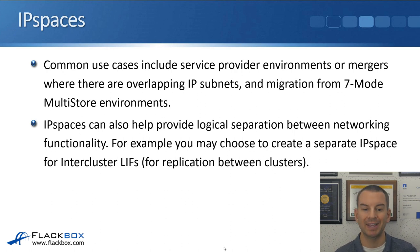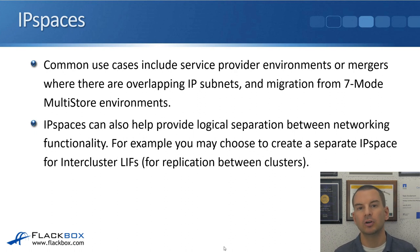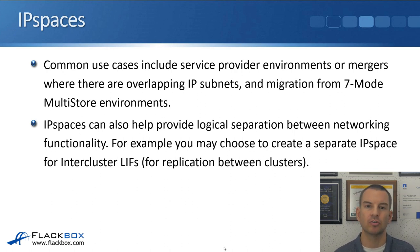Another reason is if you're migrating from the old 7-mode ONTAP, which did support duplicate IP addresses long before the clustered version did. If you were migrating from 7-mode with duplicate IP addresses, you would use IP spaces to continue supporting those duplicate IP addresses in the new clustered ONTAP. IP spaces are also sometimes recommended to provide logical separation between networking functionality — for example, creating a separate IP space for your inter-cluster lifts, which are used for replication traffic for SnapMirror and SnapVault.